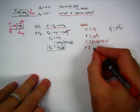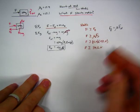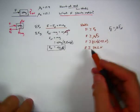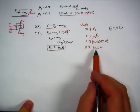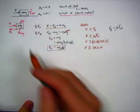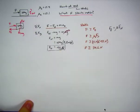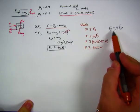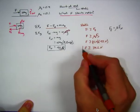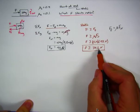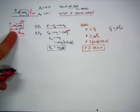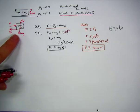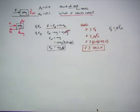0.4 times 98 is 39.2. So if the applied force is greater than or equal to 39.2 newtons, the box will start to move. We have used the static friction case along with the relationship between friction force and normal force to find that the minimum force to start the box moving is 39.2 newtons. A 39.1 newton force won't move it; 39.3 newtons will; and exactly 39.2 newtons will just overcome static friction.